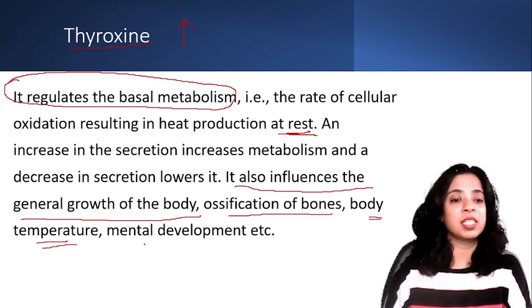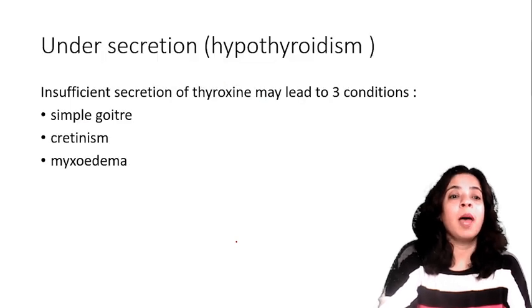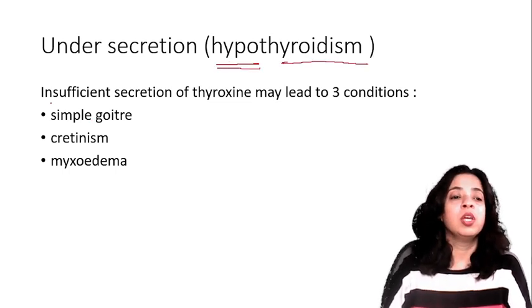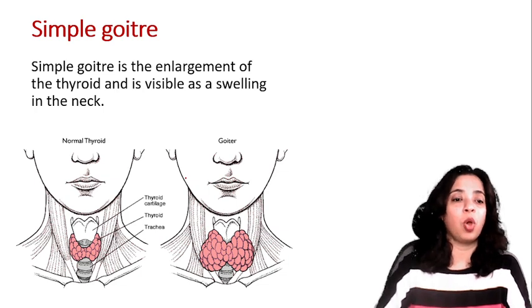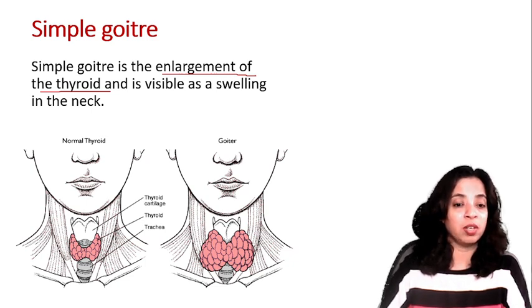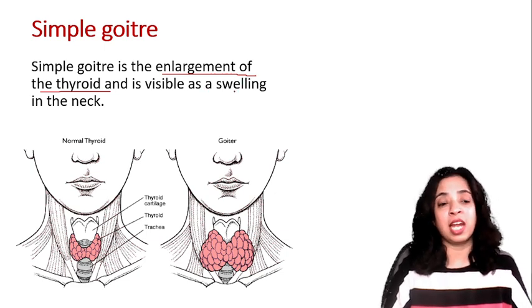Now, what happens when there is under-secretion, or less secretion — this is known as hypothyroidism. Insufficient secretion of thyroxine may lead to three conditions: simple goiter, cretinism, and myxedema. Simple goiter is the enlargement of the thyroid. In the diagram you can see the normal thyroid — the red butterfly-shaped bi-lobed structure — and here it is enlarged, so there is a swelling in the neck. Simple goiter is the enlargement of the thyroid visible as a swelling in the neck.